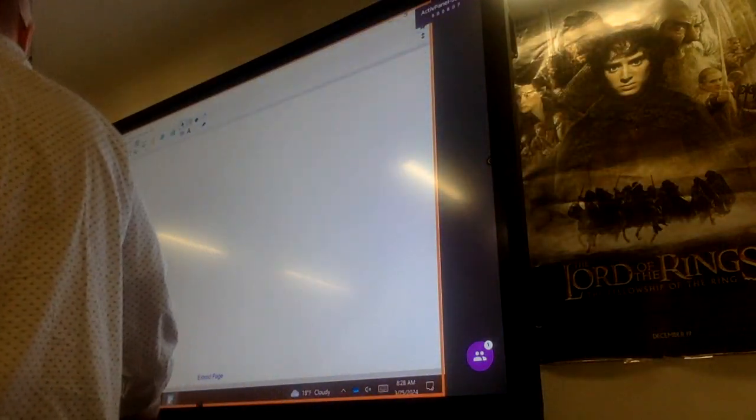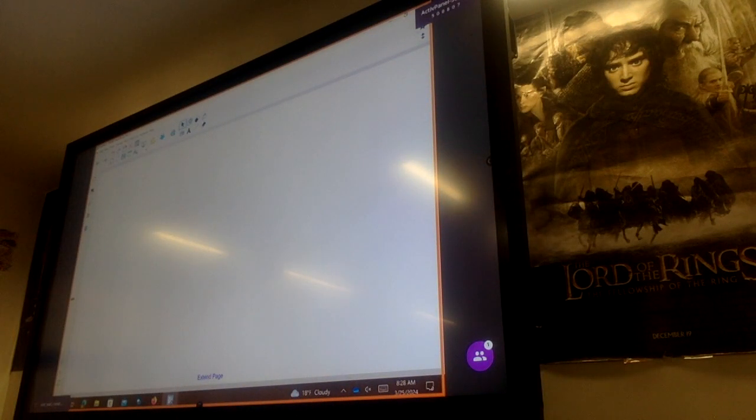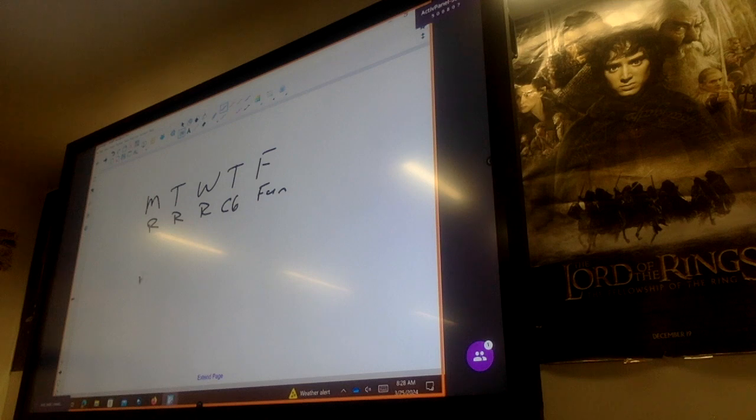Alright, so let's see if we can make this work. Today is the 25th, right? So, okay, review chapter 6, and then something fun. Monday, Tuesday, Wednesday, Thursday, Friday. Next week, I'm going to just make sure I have my dates right.